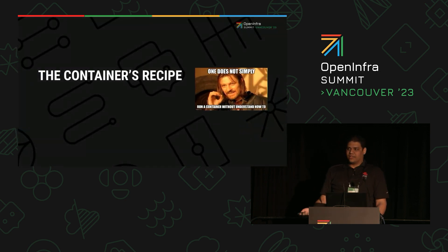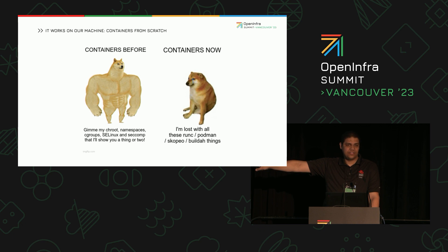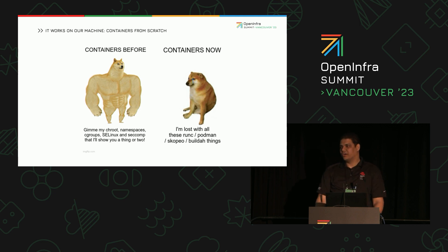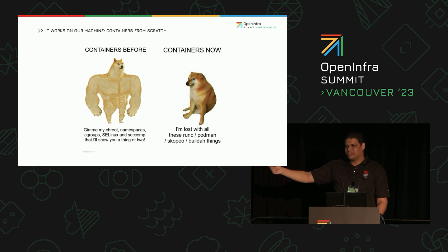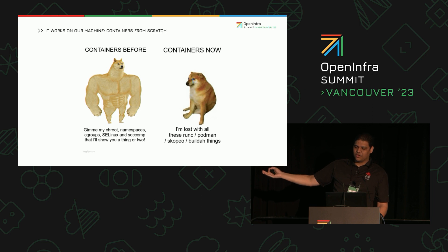Now let's talk about what comprises a container after all — what it is made of. Before we had all this tooling to create containers, we needed to do it by hand using things like chroot, user space by using namespaces, cgroups, SELinux, seccomp, overlayfs, and other stuff. Imagine yourself trying to build your own container only using this kind of tooling — it's possible, but it's not feasible. That's why some initiatives and solutions came up, like Podman, Docker, LXC, and others, to facilitate your work. And also, you have tools to build your own containers like Buildah and Skopeo.